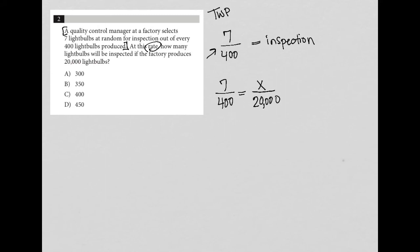So now that I have these two ratios set up with an equal sign in between, this is a proportion. You solve a proportion by cross multiplication. So I can turn this into 400X, right? So that's that multiplication there, equals seven times 20,000, which is 140,000.